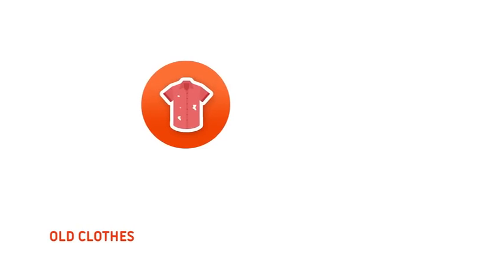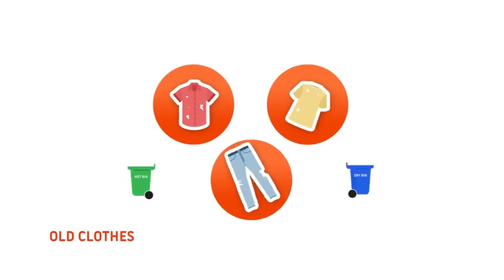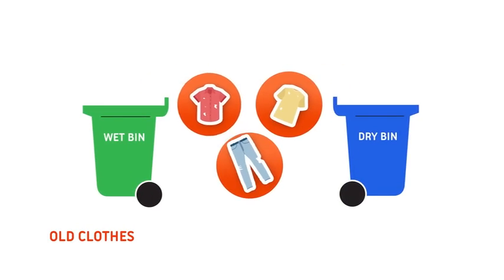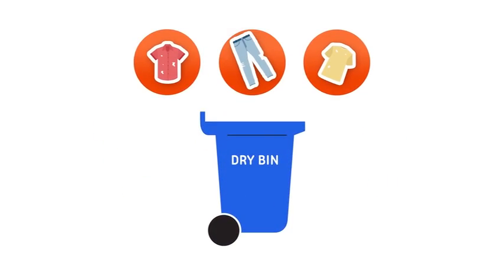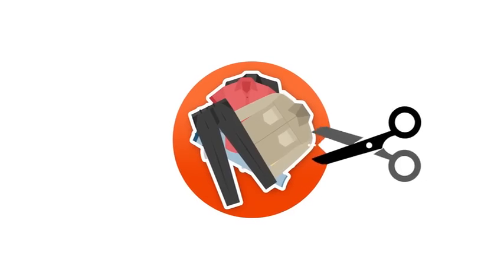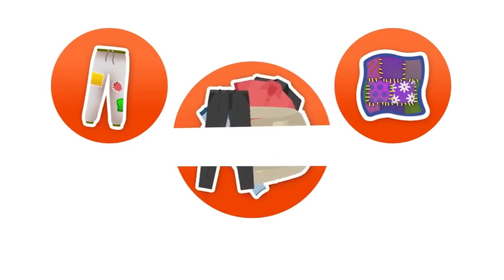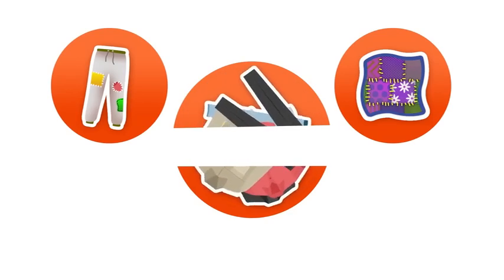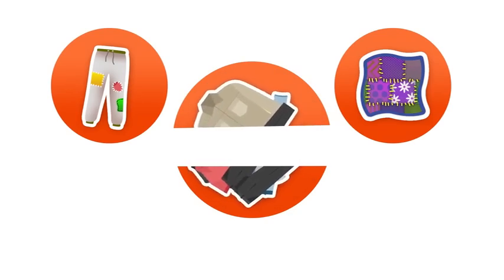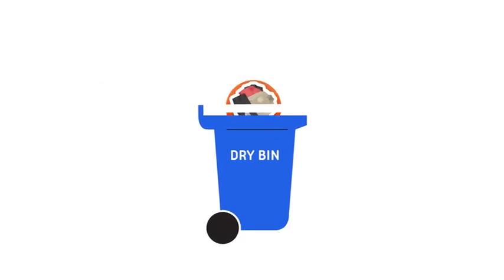And last one now. What about old clothes? This is a tricky one. Old clothes go into the dry bin, although it is better to try to reuse them. We can always cut up old clothes to make rags and even new clothes. But in case you need to throw away any old fabric, then the dry bin is the way to go.